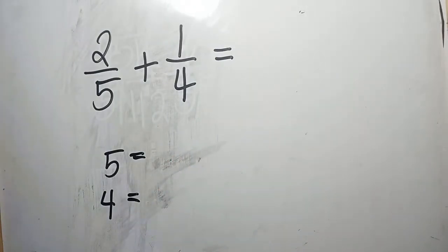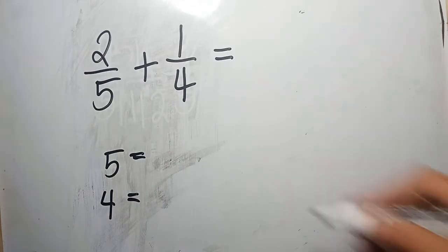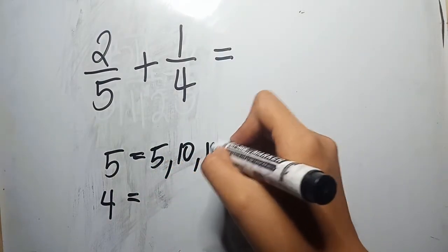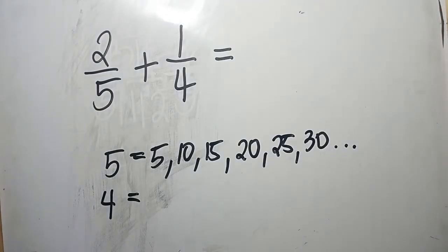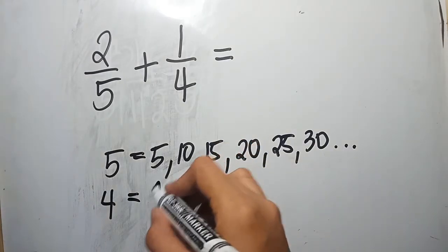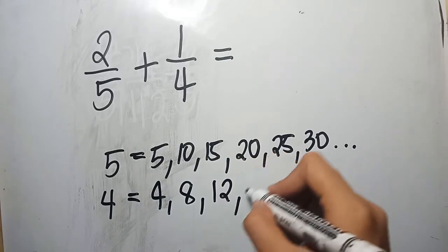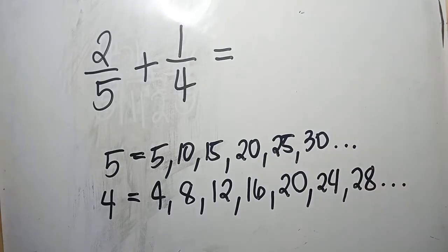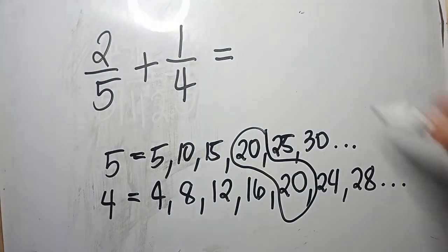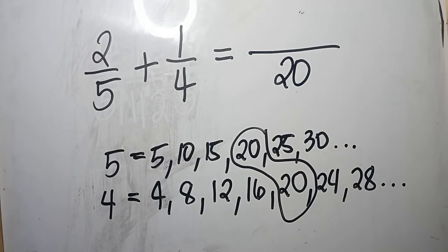To look for the least common denominator, we will list down all the multiples of 5 and 4. For 5: 5, 10, 15, 20, 25, 30, and so on. For the multiples of 4: 4, 8, 12, 16, 20, 24, 28, and so on. Since we are looking for the LCD, we are going to look for the least common multiple of 5 and 4, which is 20. So we write 20 as the LCD. That's the first thing we do — we look for the LCD or the least common denominator.